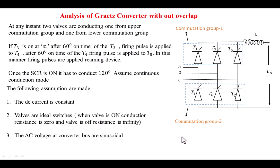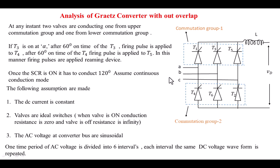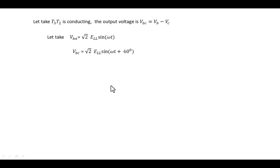One cycle of AC voltage consists of six pulses of DC voltage — that is why we call it a six-pulse converter. If we assume that T3 and T2 are conducting, the output voltage becomes Vbc, which is equal to Vb minus Vc. We have taken the reference voltage VbA, which we can write mathematically as root 2 · ELL · sin(ωt), where ELL is the RMS line voltage.